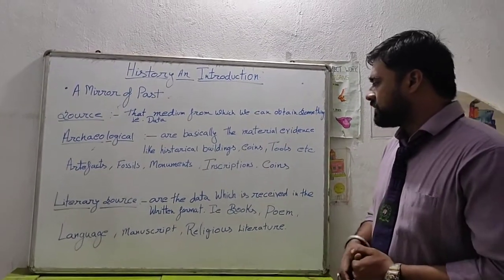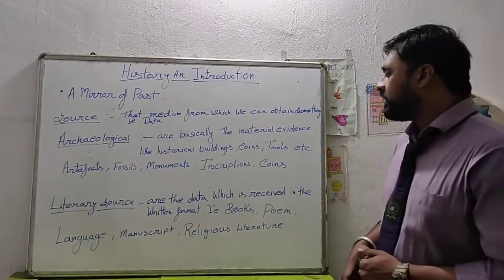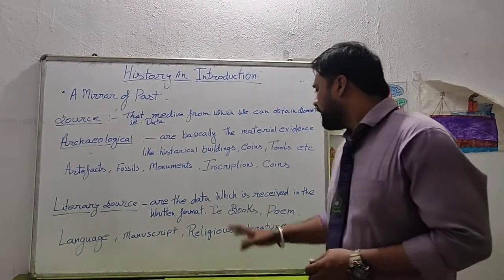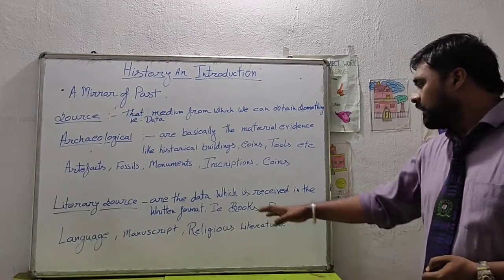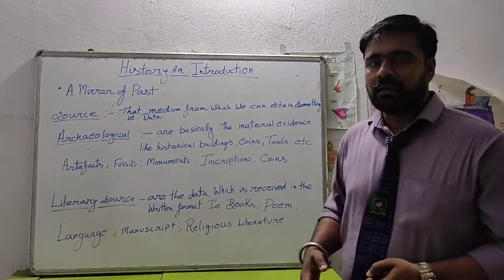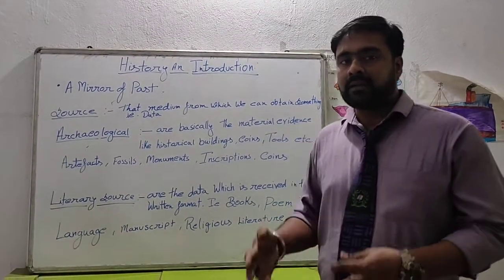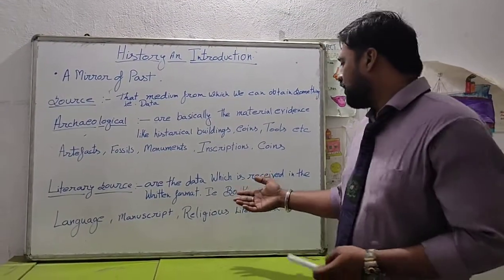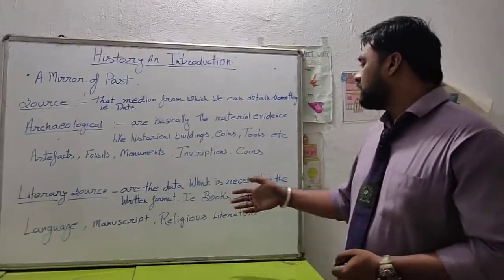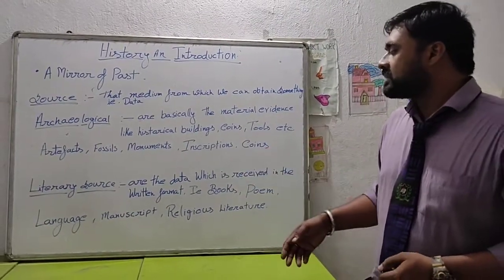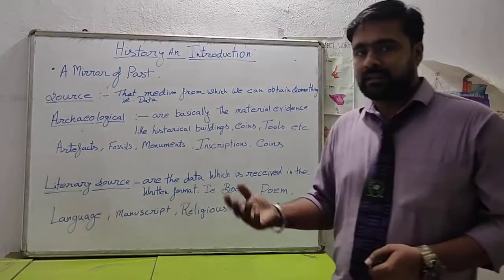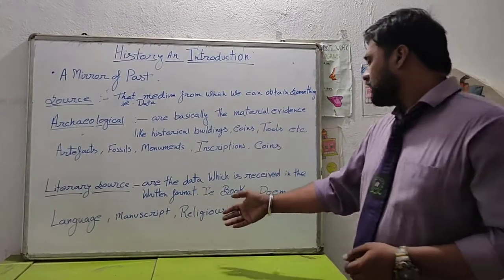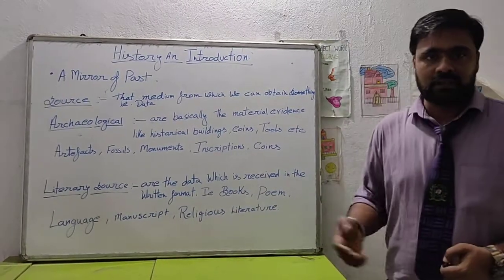The second point is literary sources. Literary sources are data recovered in written format — they can be books or written records. Literary sources are found in languages, meaning we convey information through words, manuscripts, inscriptions, and religious and non-religious texts.